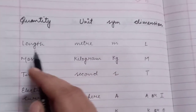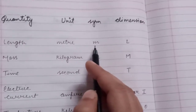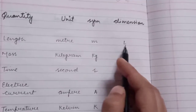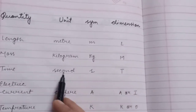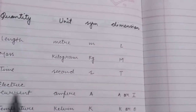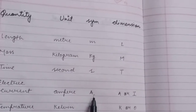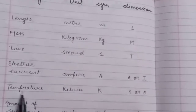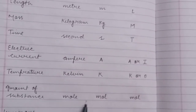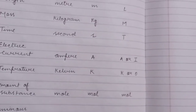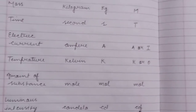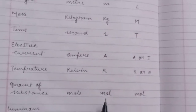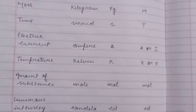The first is length — unit: meter, symbol: m, dimensional formula: L. Mass — kilogram, kg, dimension: M. Time — second, s, dimension: T. Electric current — ampere, A or I. Temperature — Kelvin, K or theta. Amount of substance — mole. Luminous intensity — candela, cd. These are the seven fundamental quantities used to build all dimensional formulas.